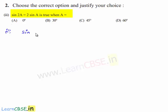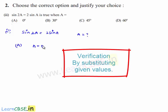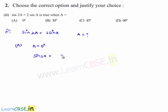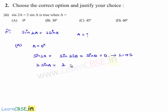Third bit: sin 2A = 2 sin A — for what value of A? Option A gives A = 0°. Substituting in LHS: sin(2×0°) = sin 0° = 0. For RHS: 2 × sin 0° = 2 × 0 = 0. Since LHS = RHS = 0, option A (A = 0°) is the correct answer.